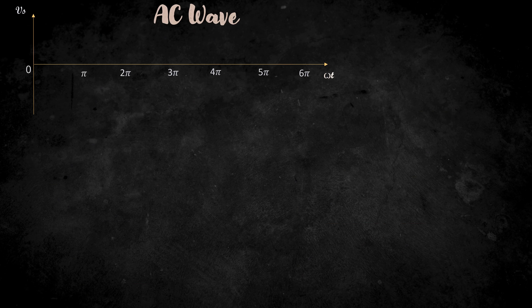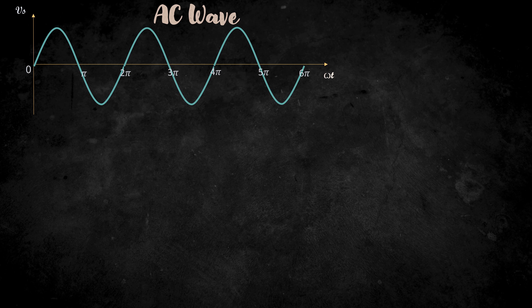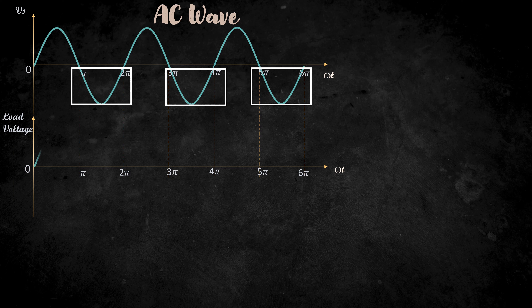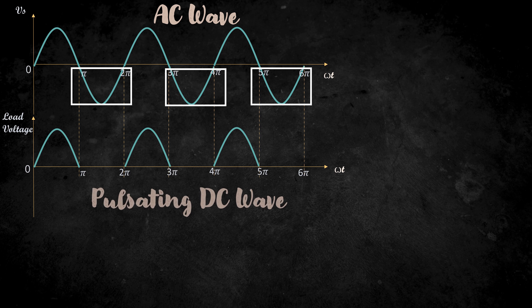Now, let's consider sinusoidal AC. If we remove the current flowing in the negative direction, then the waveform will be something like this. Now we get the pulsating DC waveform. From this, we can understand that if we block the current that flows in the opposite direction, then we can get DC from the AC supply. We also know that a diode will allow the current to flow through it in only one direction.